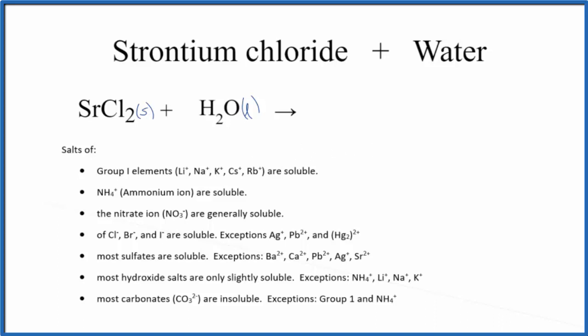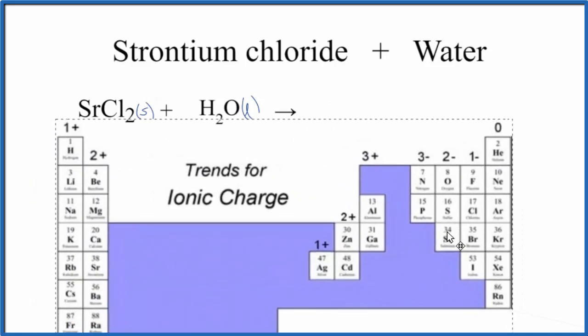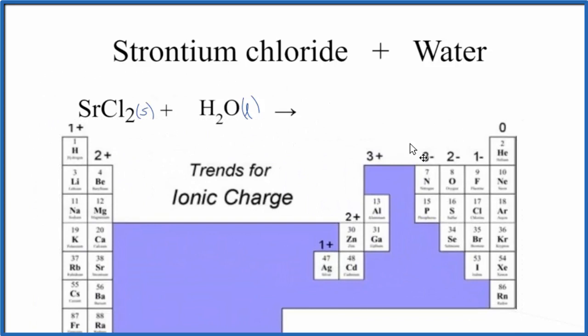But what will those ions be? The periodic table can help us figure that out. So as we look for strontium, it's right here. Strontium will be two plus. So the ionic charge on the strontium is two plus. It's in group two.